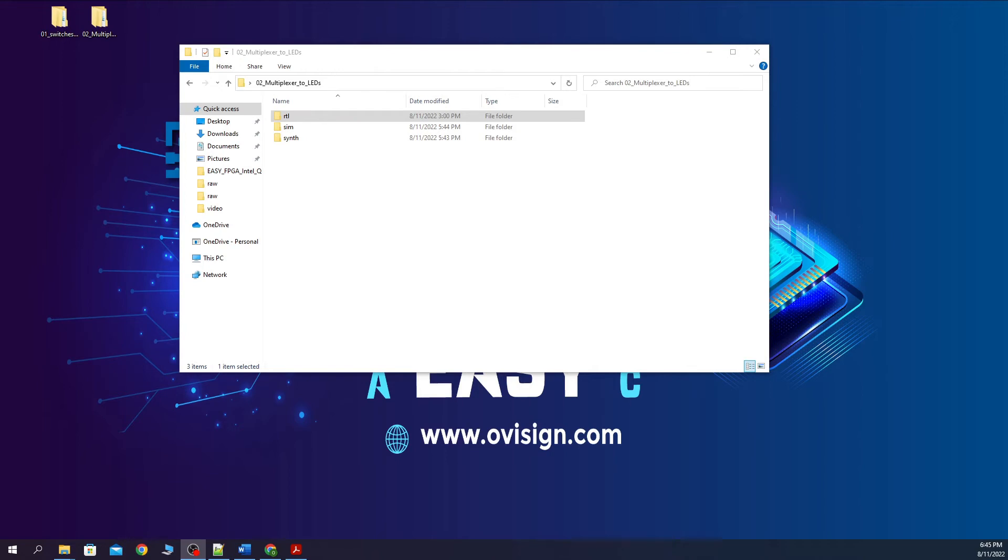Let's create now our ModelSim project. First we need to make a folder called multiplexer_to_LEDs. And after this 3 subfolders.